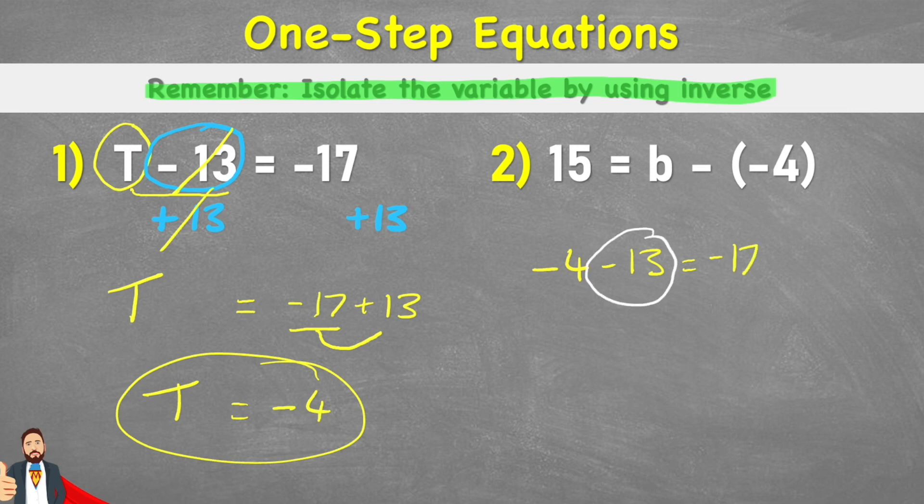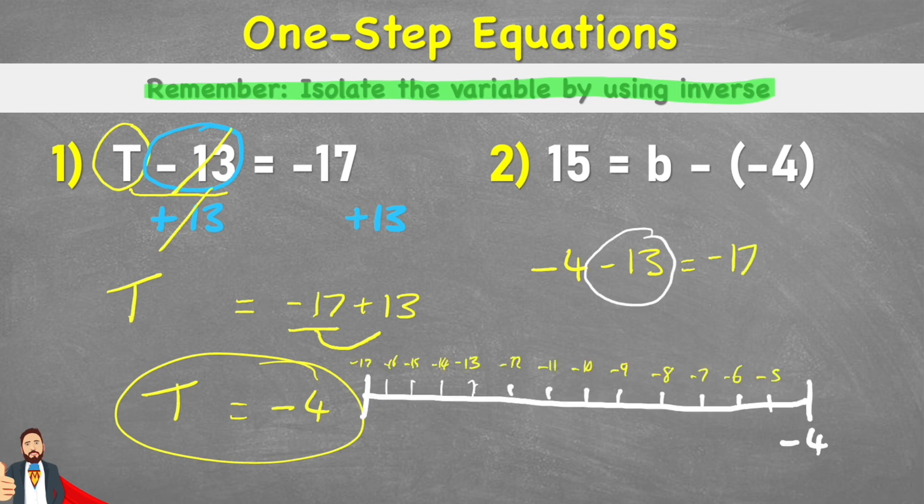And one way to help us is by drawing a number line, so I'm going to do that now. There we go. So we start with negative 4, and we're coming 13 places down the number line. So here we go. 1, 2, 3, 4, 5, 6, 7, 8, 9, 10, 11, 12, 13. Landed me on negative 17. So we know we're right.